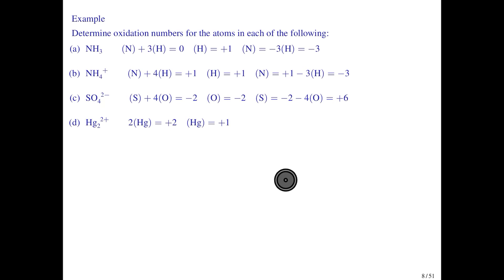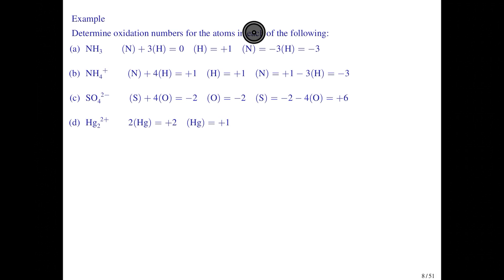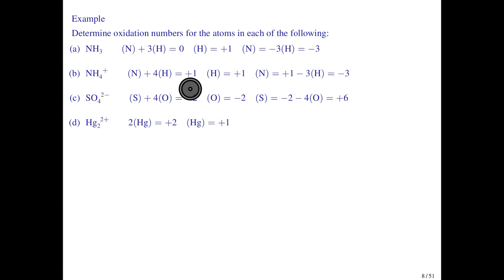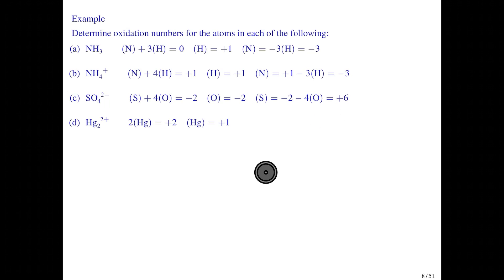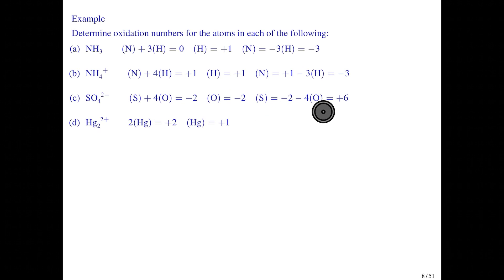In ammonia, the oxidation number of nitrogen plus three times hydrogen's oxidation number must equal zero. Assigning hydrogen plus one gives nitrogen a minus three oxidation state. For the ammonium ion, the sum must equal the ion charge of plus one; assigning hydrogen plus one still gives nitrogen minus three. For sulfate, the oxidation number of sulfur plus four times oxygen's minus two must equal minus two, which gives sulfur a plus six oxidation state.